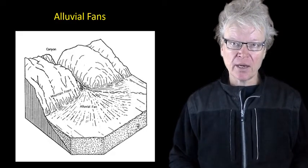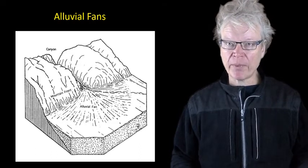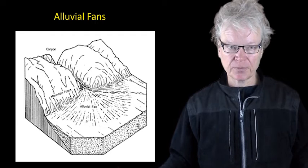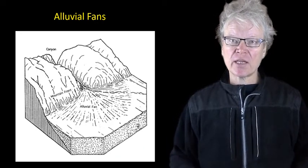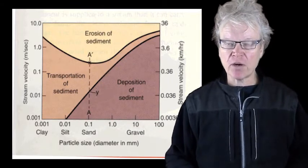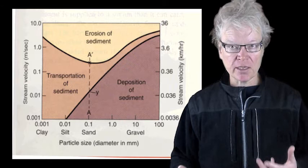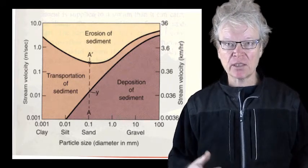Where does poorly sorted deposition occur? Where do you get water flowing that suddenly stops? The most common area is on a relatively steep slope that suddenly gets flat. The large-scale environment where that occurs is an alluvial fan - the water comes down the river quite rapidly carrying lots of different particle sizes, and then suddenly stops at a very flat area and all those particles get deposited. Understanding the relationship between erosion and deposition helps you understand river velocity and particle sizes.